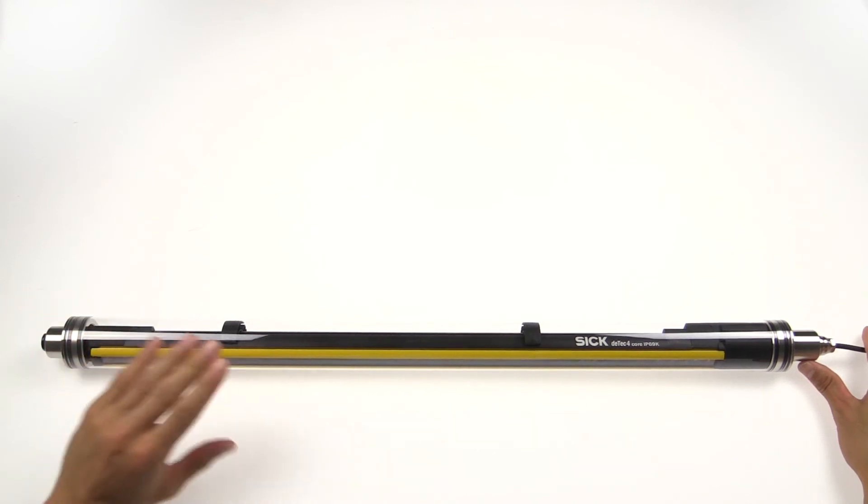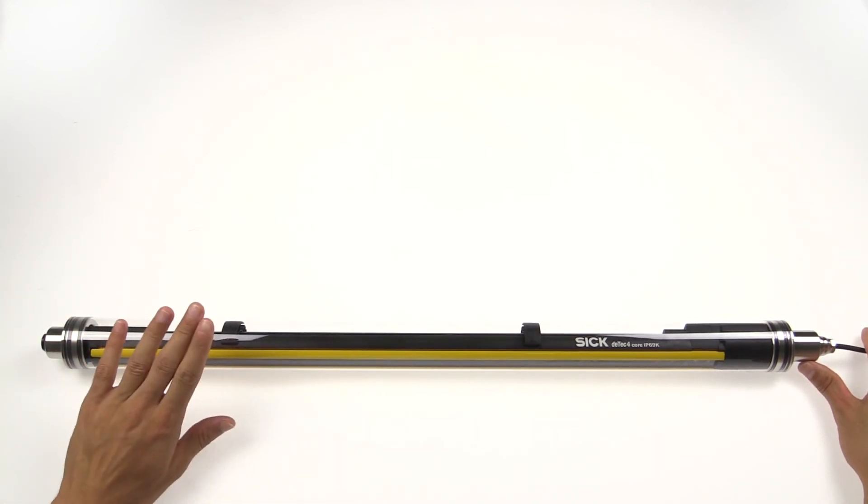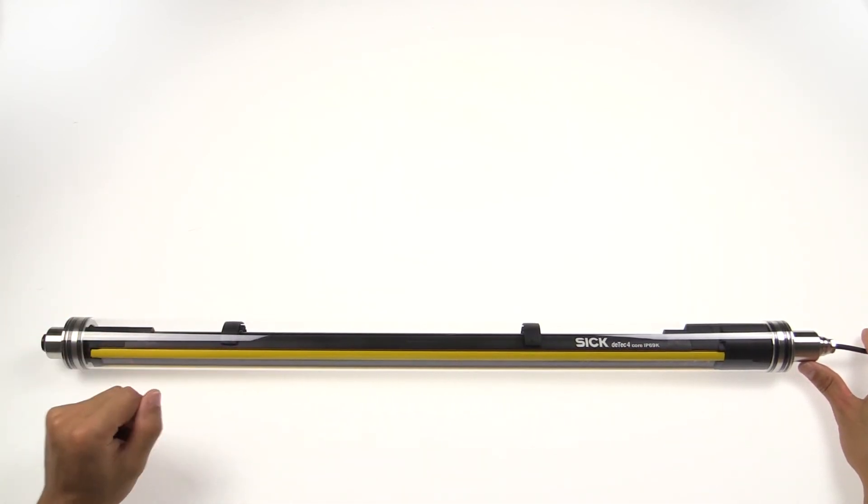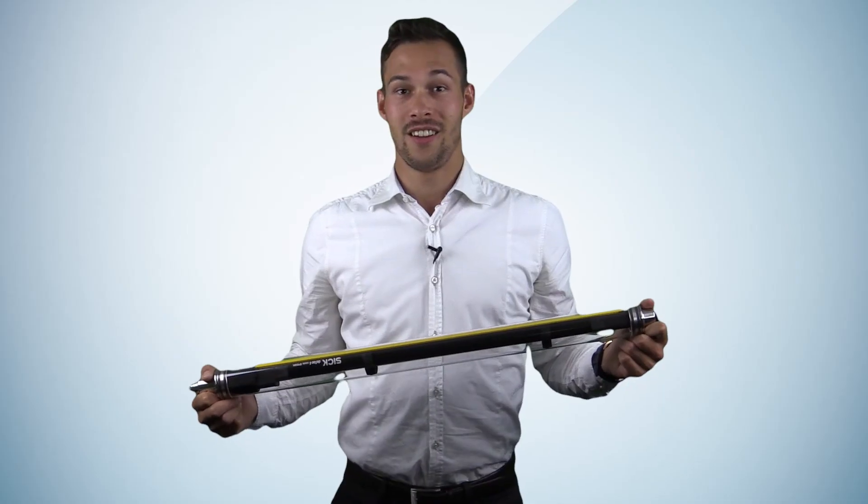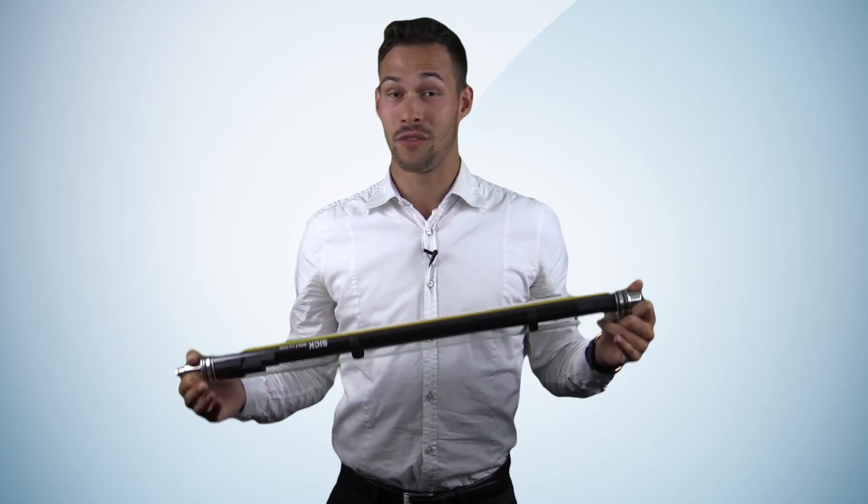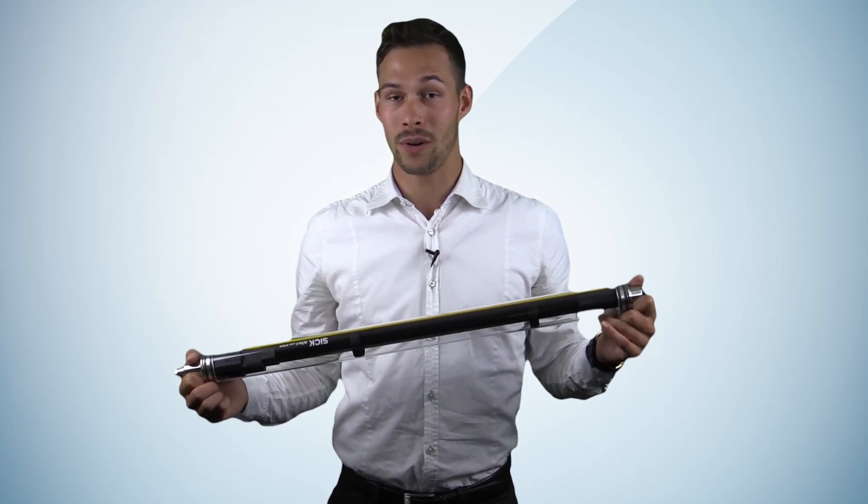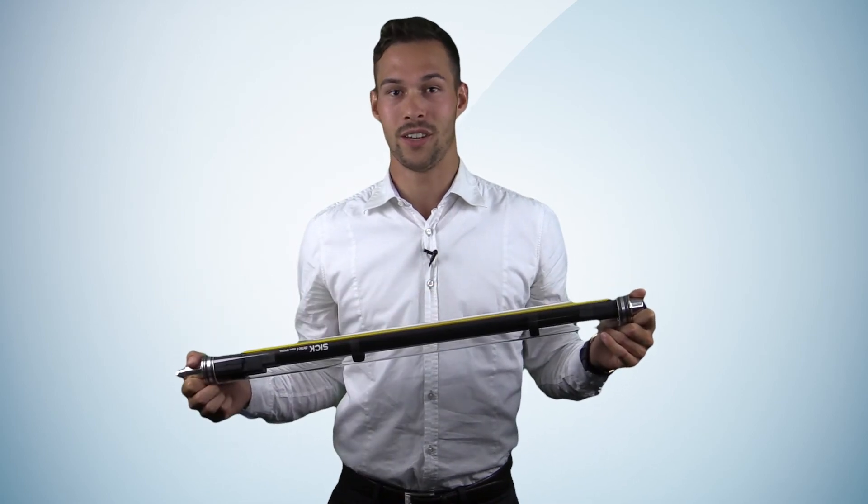And this was the whole procedure to remove and replace the protective housing on the DTEK and DTEK IP69K products. I think you got an easy and fast overview of the easy replacement of the IP69K housing on the DTEK and DTEK IP69K products.